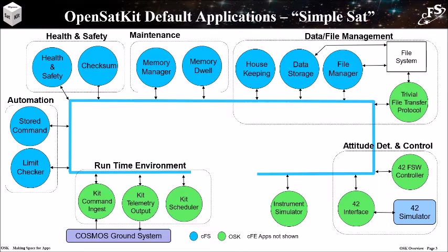OpenSatKit contains several applications that are configured to support a fictitious mission called SimpleSat. SimpleSat provides a reference mission context to illustrate how apps can be used to meet a mission's objectives. The circles represent apps and the blue line represents the software bus that is used to transfer messages between apps.